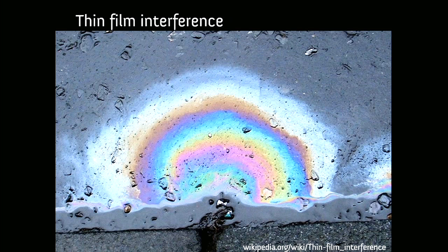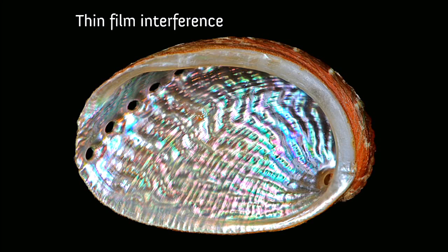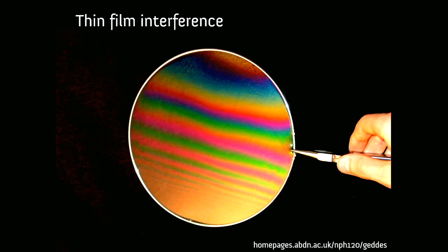The next topic is thin film interference, which you've probably encountered in high school or first year. Examples include an oil slick on a road, a CD, an Australian abalone shell, and soap bubbles. In a soap bubble, the change in colour is caused by the varying thickness of the soap film — probably due to gravity — which changes the interference pattern. Soap bubbles are not rainbows: there are colours in soap bubbles not found in rainbows, and vice versa.